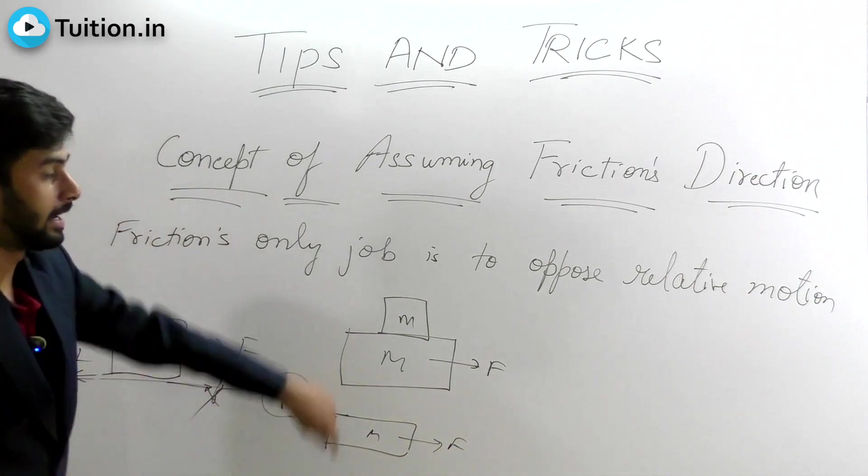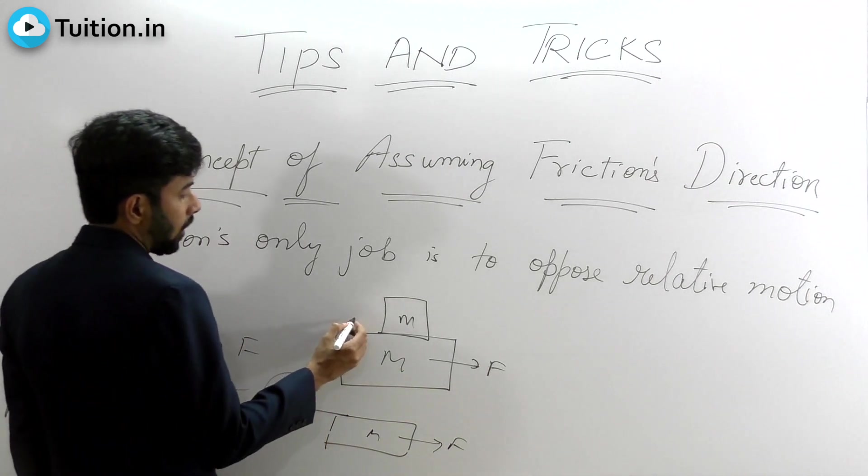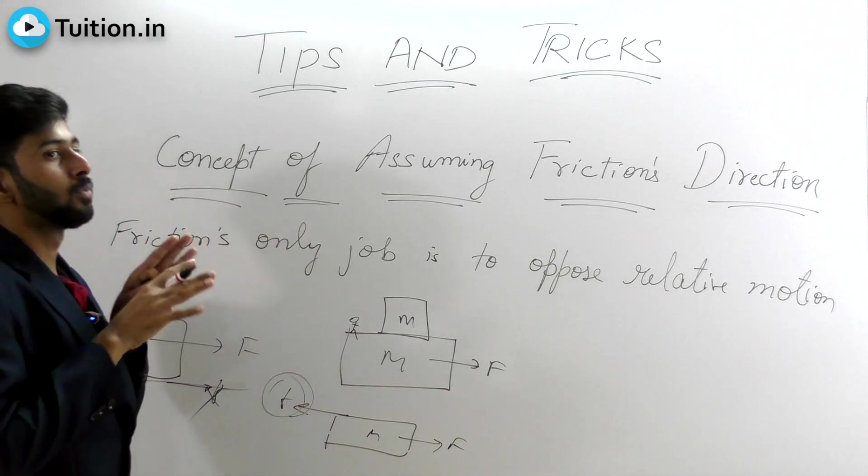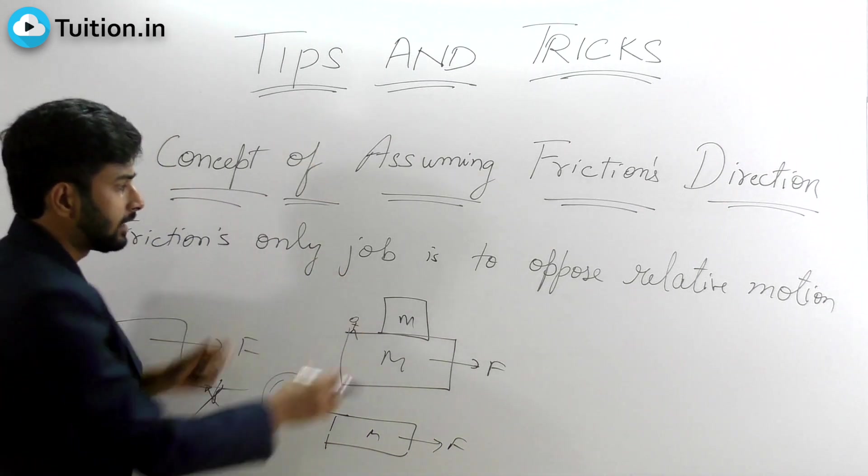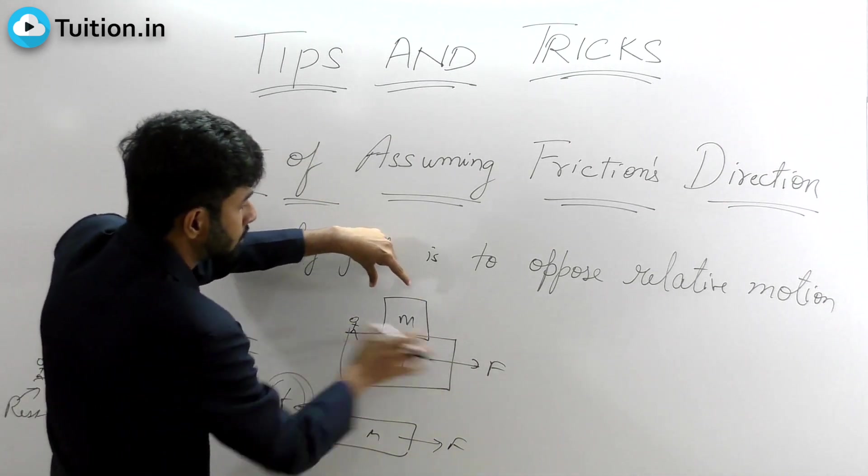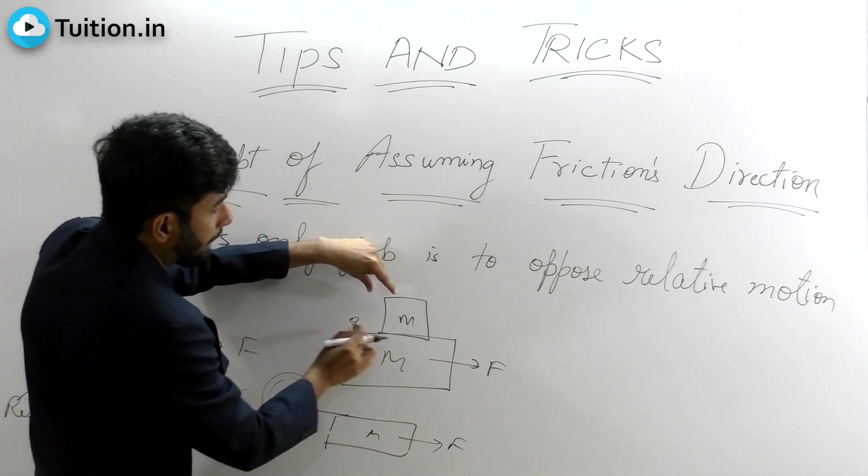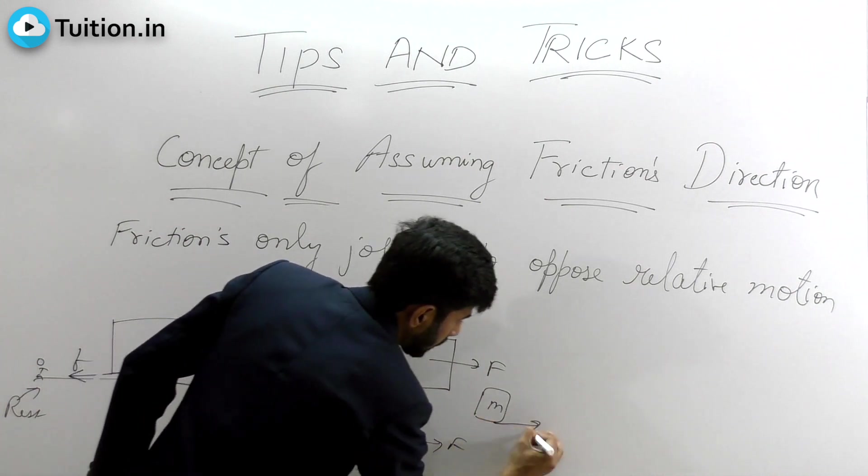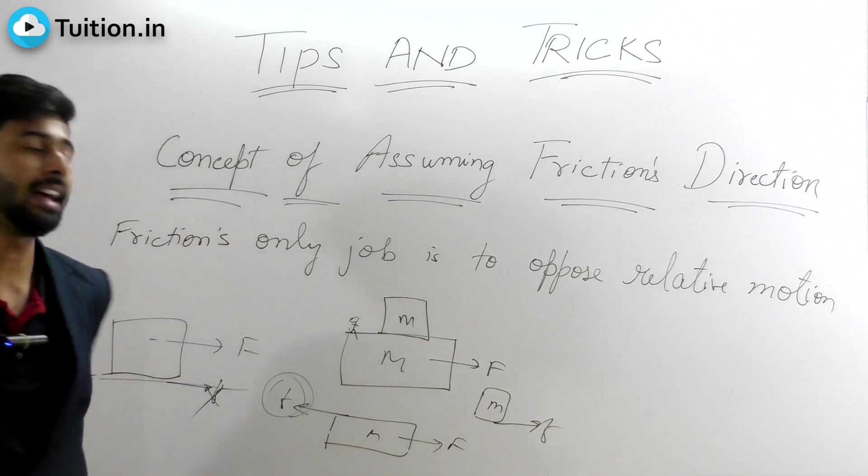So friction will oppose the relative motion. And if I stand on capital M, now because capital M is moving forward and actually small m is at rest, but if I stand on capital M, it will look as if small m is moving backwards. That is why on small m, friction is acting in the forward direction.